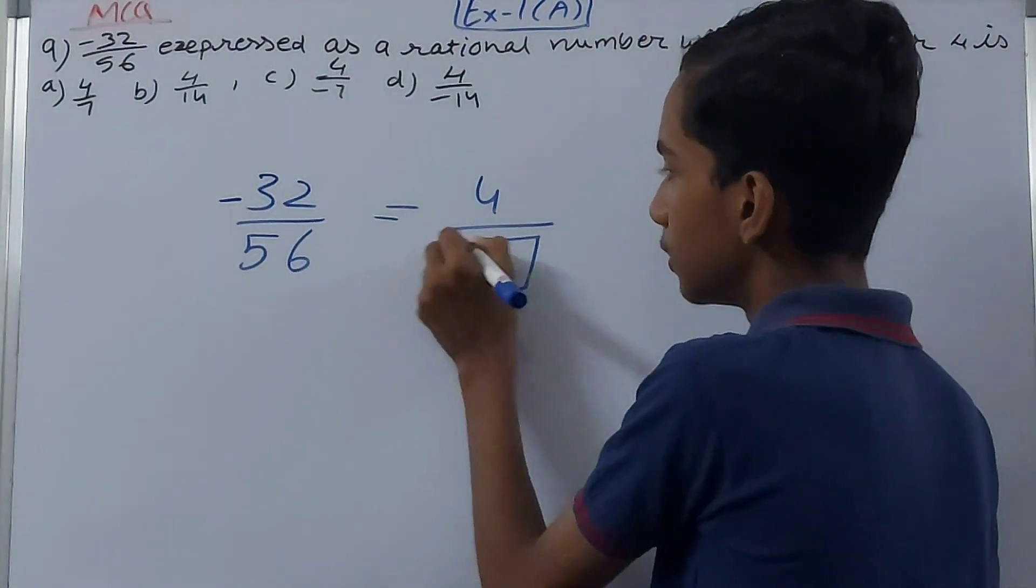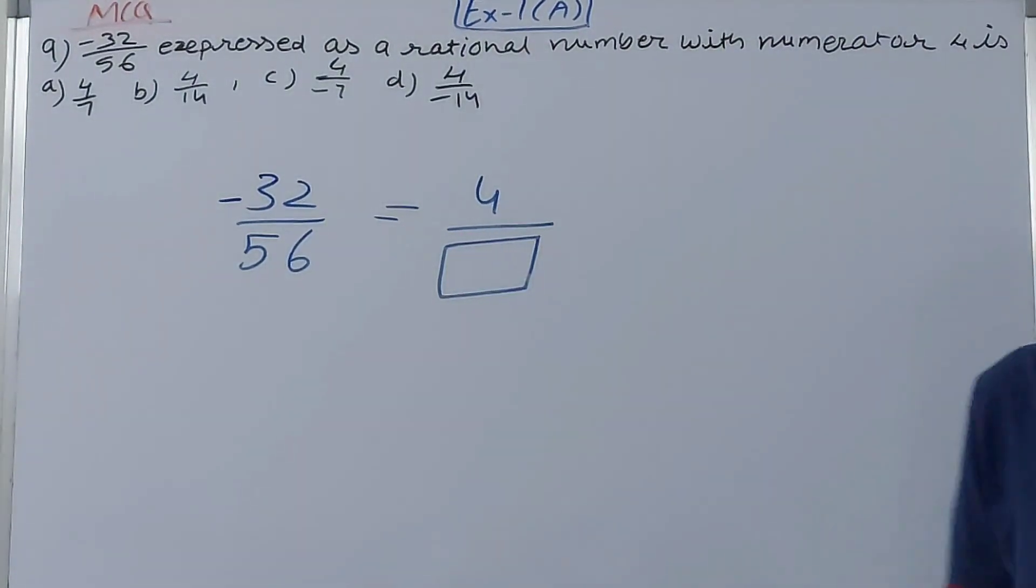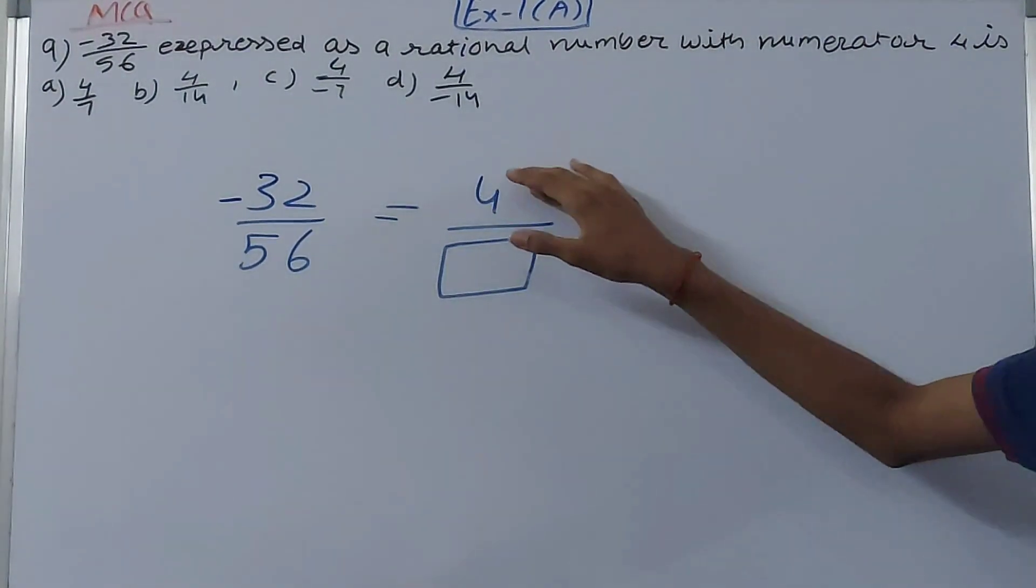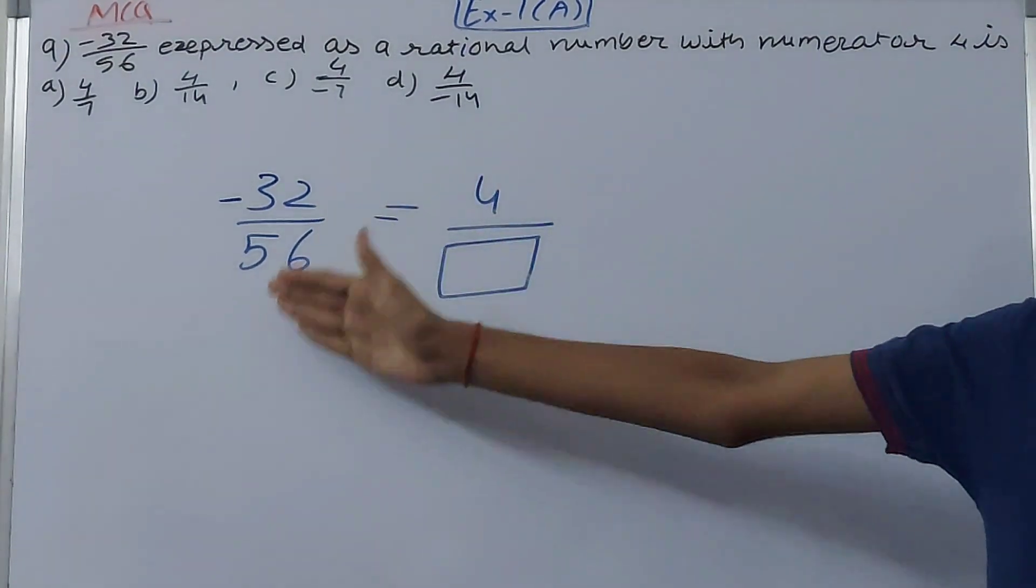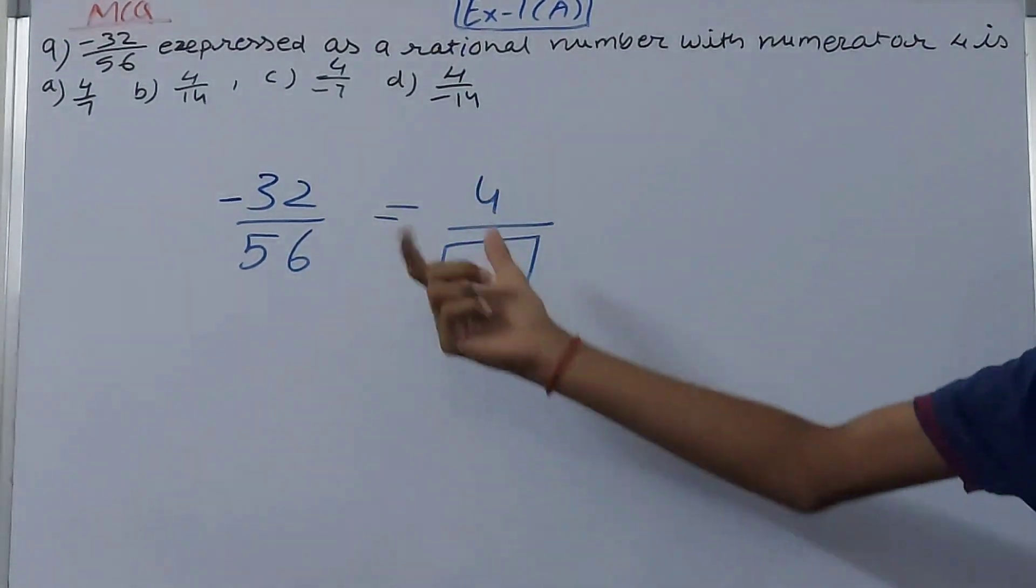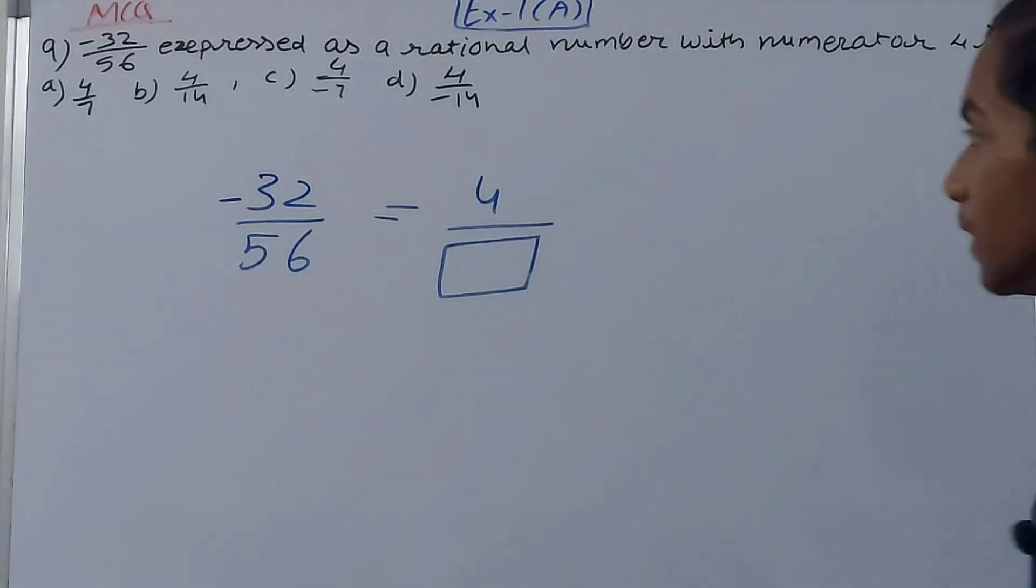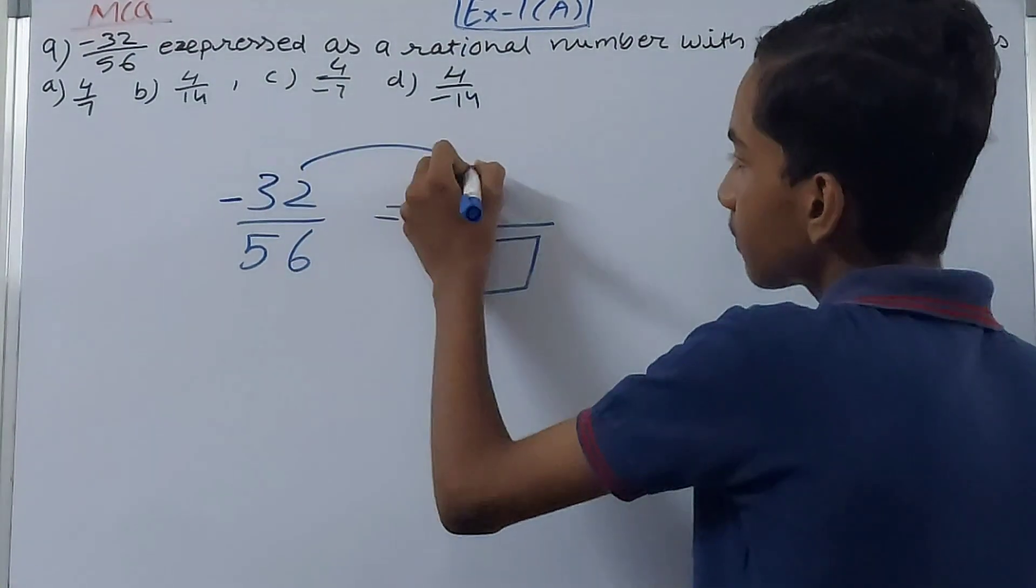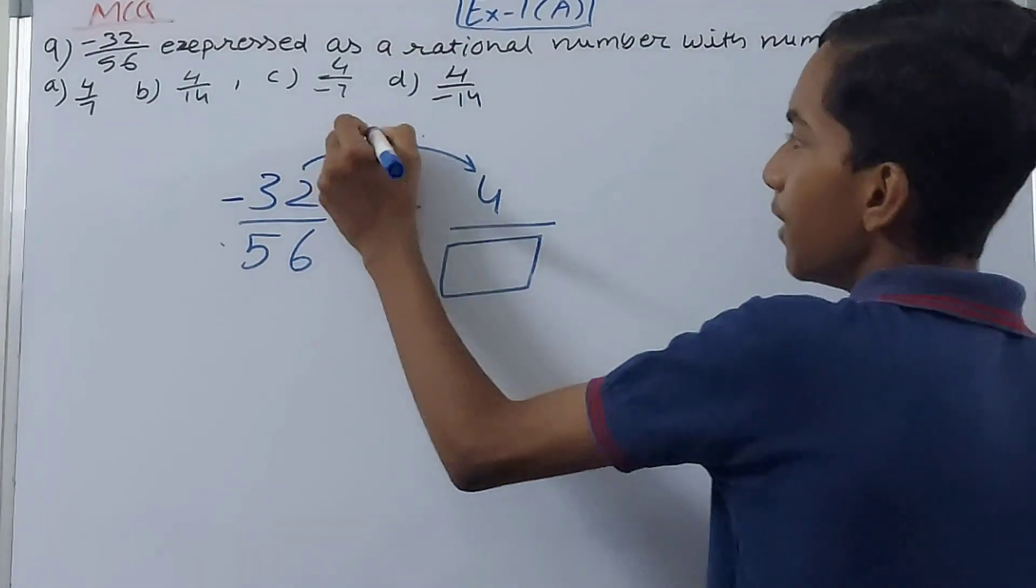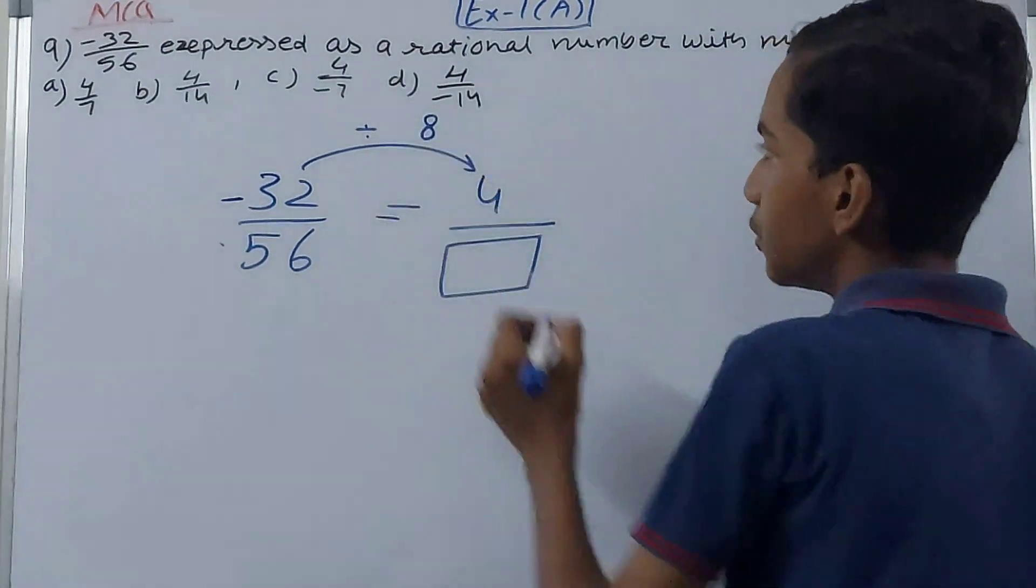So what we're going to do here - we know the numerator, so using the relationship between the two, we will find how to calculate the denominator as well. This will be divided by 8.